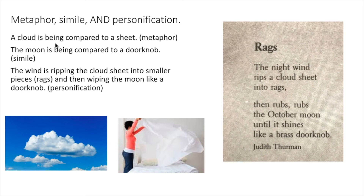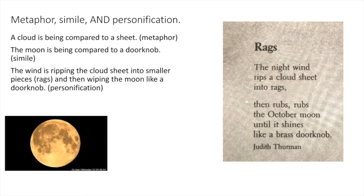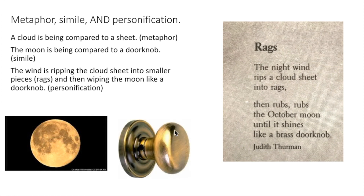The first we see is the metaphor — a cloud is being compared to a sheet, which is being ripped into rags, into small pieces by the wind. The moon is being compared to a brass doorknob. And what's being personified is the wind doing some human actions: the wind is ripping the clouds into rags, then rubbing the moon until it shines like a doorknob.